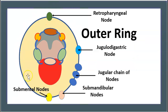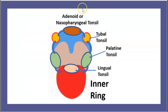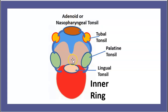Just to go over the placement: the retropharyngeal is at the top. 'Sub' usually means lower, so you have the submental and submandibular nodes at the bottom. The jugular chain runs along the side, and the jugulodigastric node is right in the middle. For the tonsils from top to bottom: adenoid at the top, then tubal tonsil just below it, then the palatine tonsil below that, and then the lingual tonsil at the bottom.